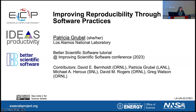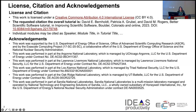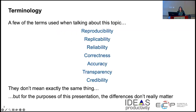It's always been important, but it's becoming more visible. There's a lot of different terminology, and historically it's been blurred a little bit. These are some of the terms that you might hear: reproducibility, replicability, reliability, correctness, accuracy, transparency, and credibility. They are all related.